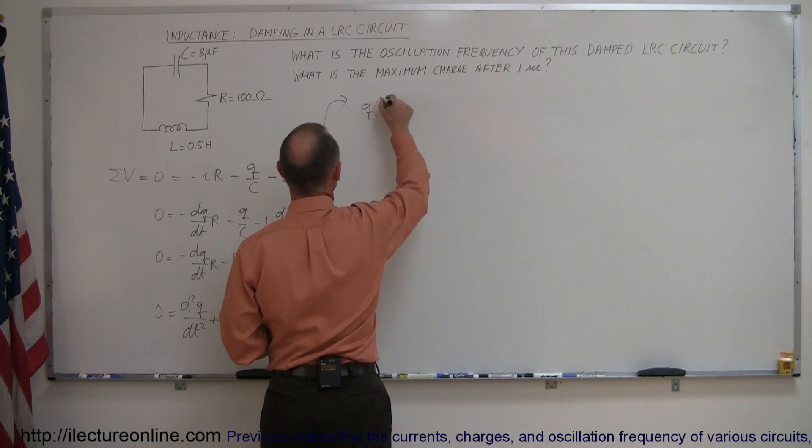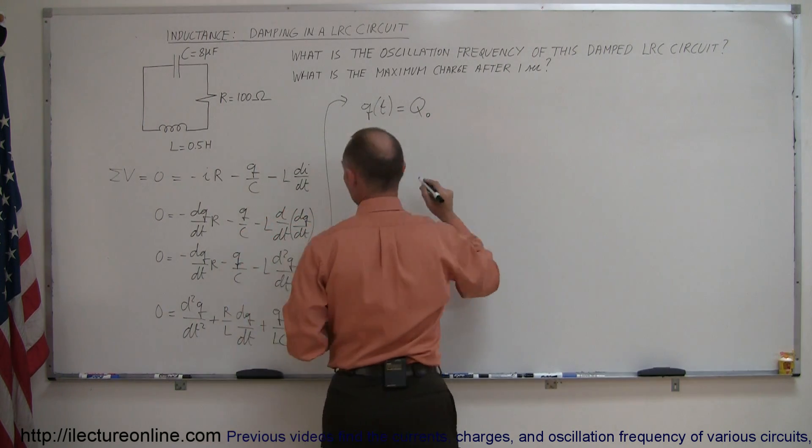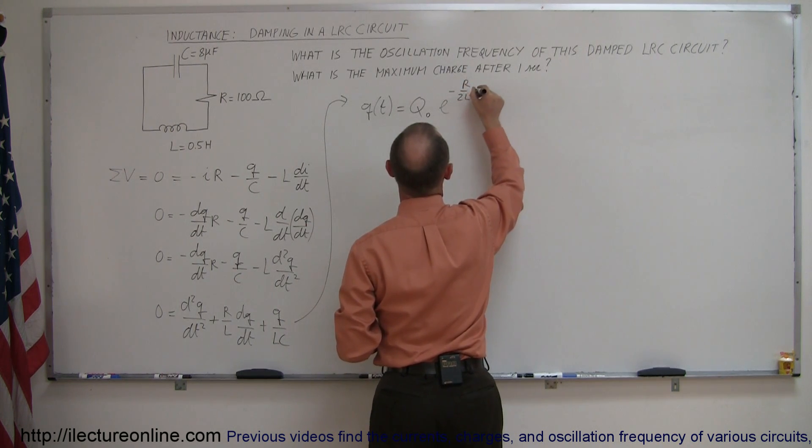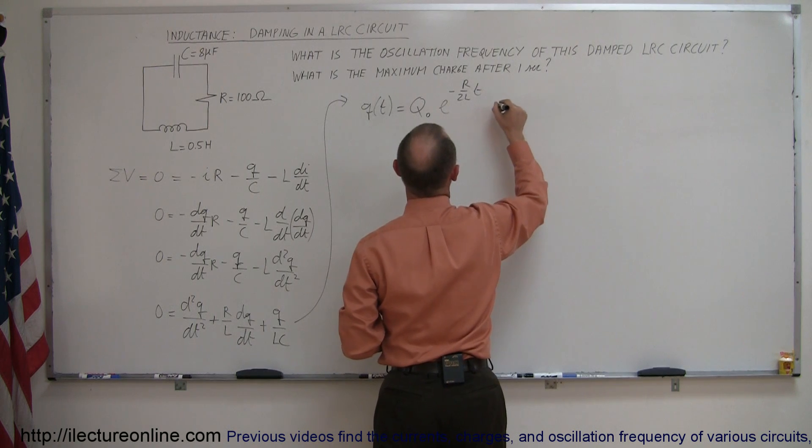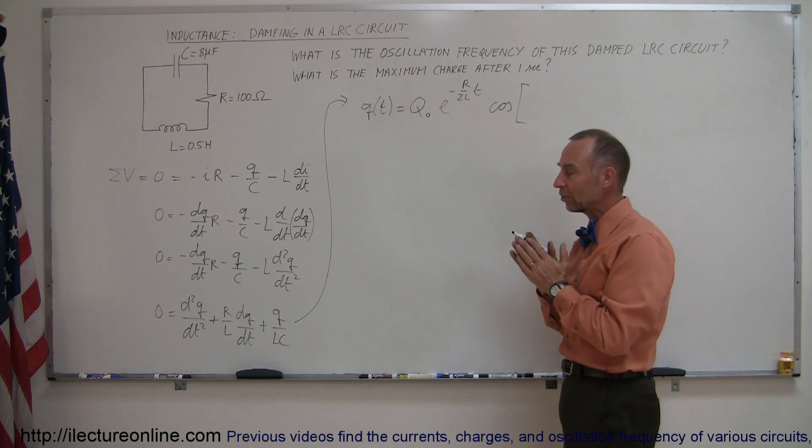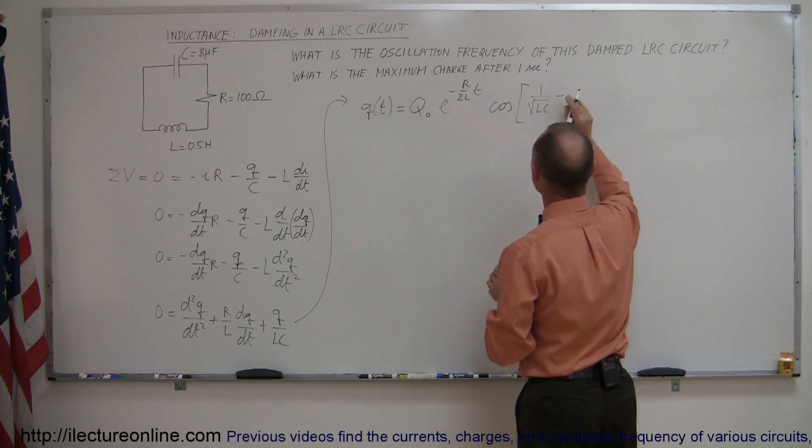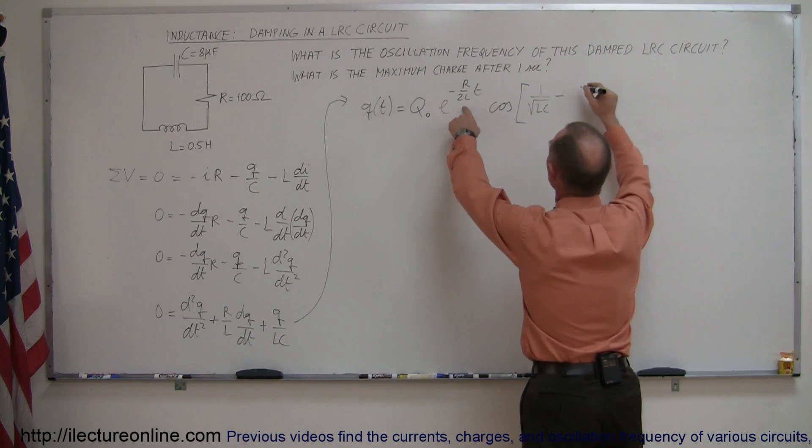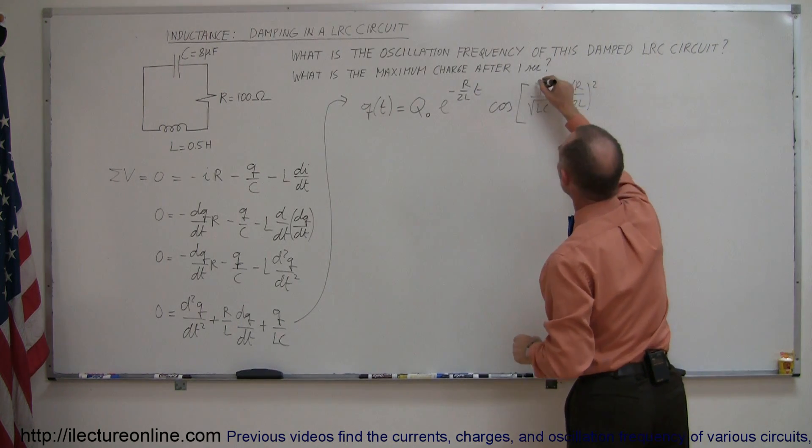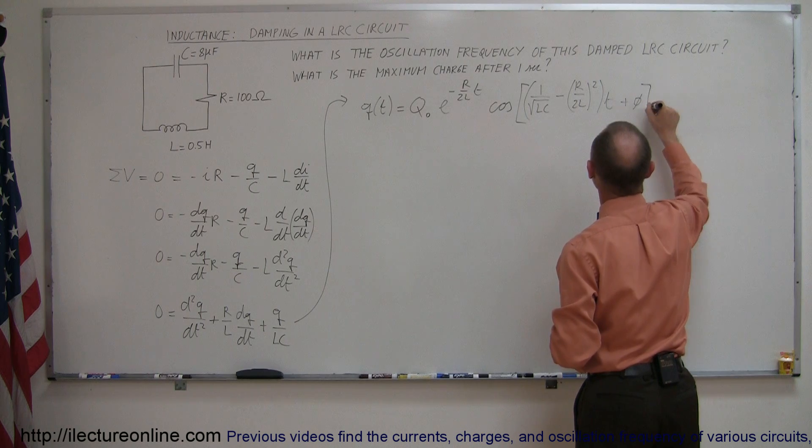So the charge as a function of time is equal to the total charge placed on the capacitor times the dampening factor that came from the resistor which is e^(-R/2L·t) times the cosine of the frequency of oscillation which is now dampened a little bit, so it's going to be one over the square root of LC minus the quantity (R/2L)² and that the whole thing would be times the time T plus the phase angle φ.